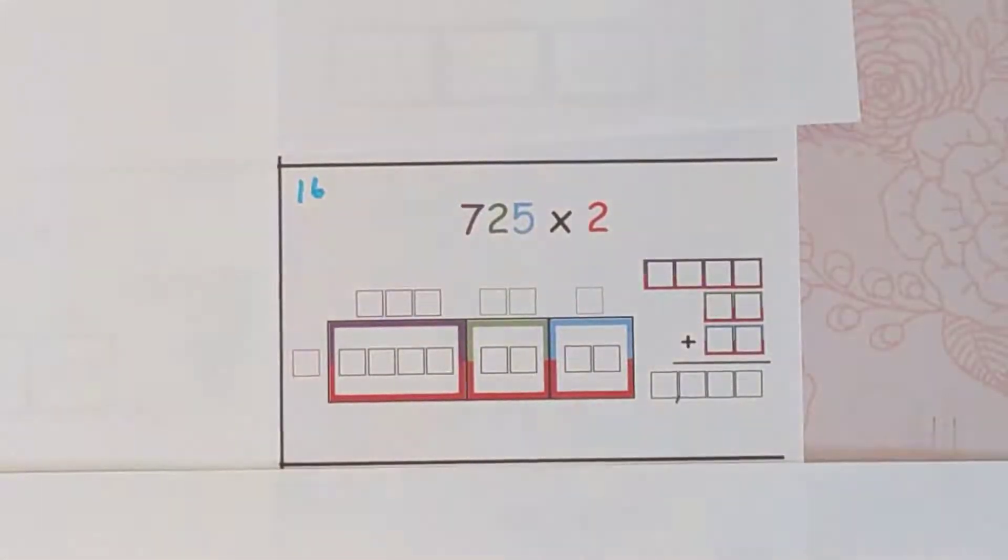Hello, we are doing the area model for multiplication, 725 times 2.